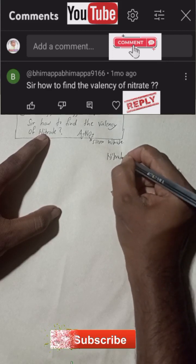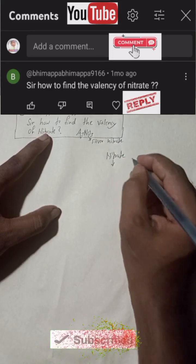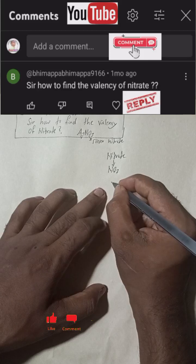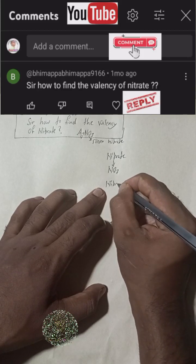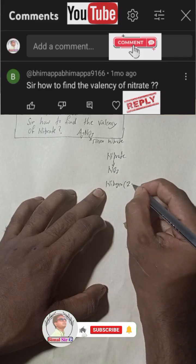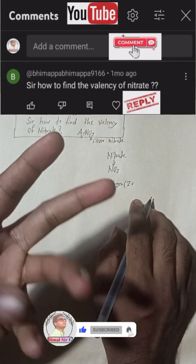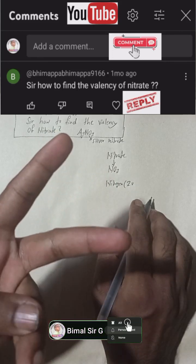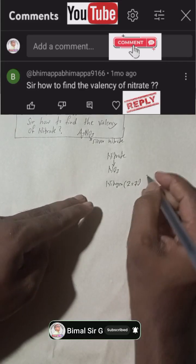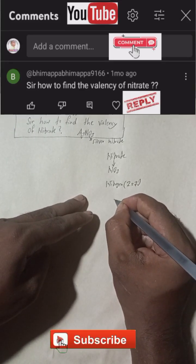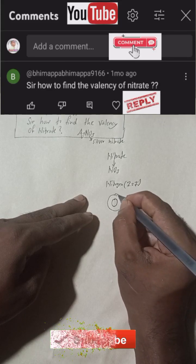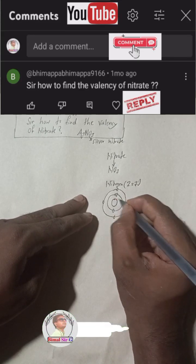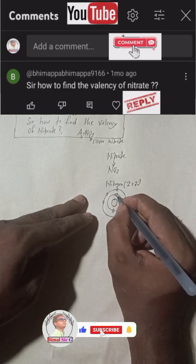Nitrate is written as NO₃. In nitrate, there is one element nitrogen, whose atomic number Z is 7 — hydrogen, helium, lithium, beryllium, boron, carbon, nitrogen — that is the seventh element. The electronic configuration of nitrogen: in the first orbit there are 2 electrons, and in the second orbit there are 5 electrons — total 7.